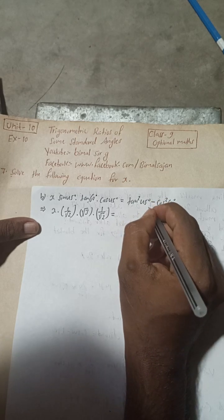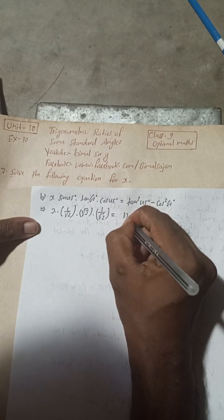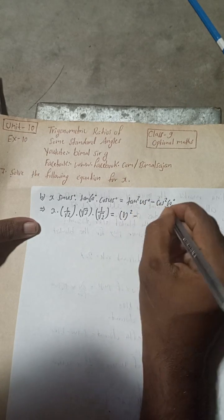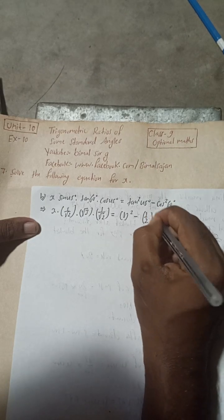is equal to tan square 45 degree, so tan 45 degree will be 1 and then square, minus cos square 60, so cos 60 is here 1 by 2 and there is a square so whole square.